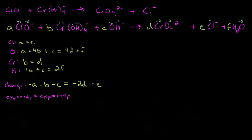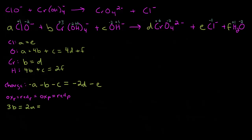Let's look at our oxidation states going from left to right. Chromium goes from the plus three state to the plus six state — that's an oxidation of three, it's in the B molecule, and there's only one chromium. Chlorine goes from plus one to minus one — that's a reduction of two, it's in the A molecule, and there's only one of those. Looking at the reaction in reverse: chromium goes from plus six to plus three — that's a reduction of three, in the D molecule. Chlorine goes from minus one to plus one — that's an oxidation of two, giving 2E, with only one chlorine.